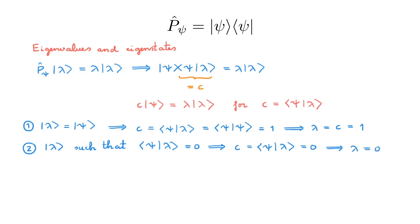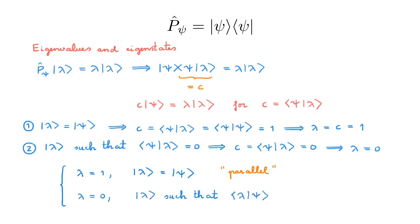So do these results make sense? An eigenstate of an operator is a state that when you act on it with the operator, it is only multiplied by a scalar, but it doesn't change direction. For the lambda equals 1 case, we have a state that is already along the state onto which we're projecting, so it will still be parallel to that state after the projection. For the lambda equals 0 case, we have a state that is orthogonal to the state onto which we're projecting, which will indeed give 0 when acting on it with the projection operator.